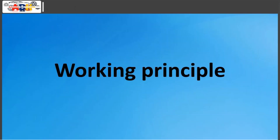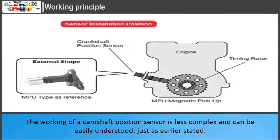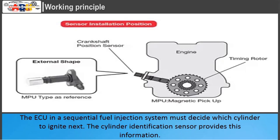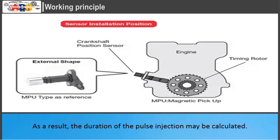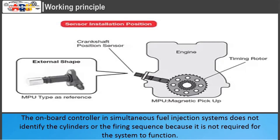The working of a camshaft position sensor is less complex and can be easily understood. In a sequential fuel injection system, the ECU must decide which cylinder to ignite next. The cylinder identification sensor provides this information. Whenever the first cylinder is at the top dead center during engine rotation, the sensor transmits a signal to the onboard controller, and the duration of the pulse injection may be calculated. In simultaneous fuel injection systems, the onboard controller does not identify the cylinders or the firing sequence, as it is not required for the system to function.